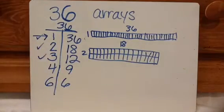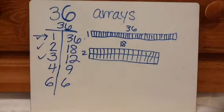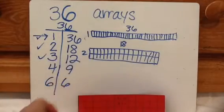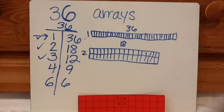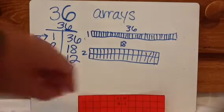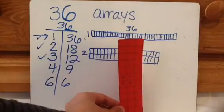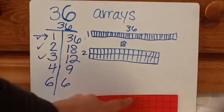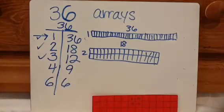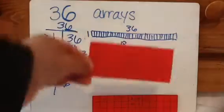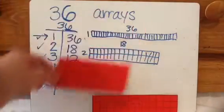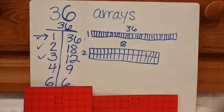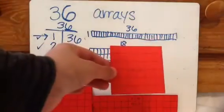Now I'm going to show you the three by twelve. So twelve by three or a three by twelve — it's the same thing. You can turn it this way and call it a twelve by three, or turn it this way and call it a three by twelve. That's why you see it both ways. Then we have a four by nine, or a nine by four, however you want to see it. Then we have a six by six.